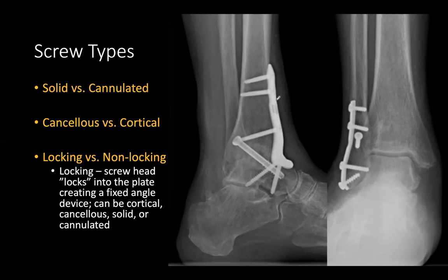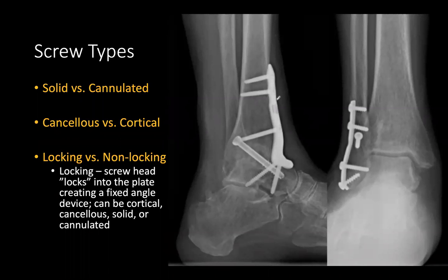Non-locking screws must cross both cortices of the bone, whereas locking screws can utilize the plate itself as a point of fixation — so they can get purchase crossing just one cortex because the plate provides the second point of fixation.